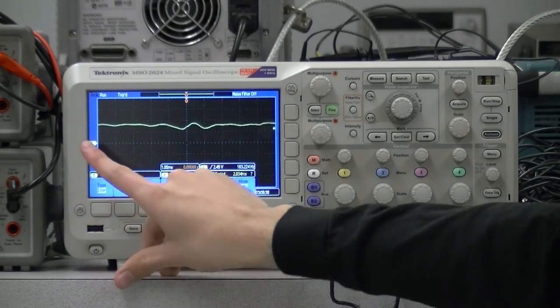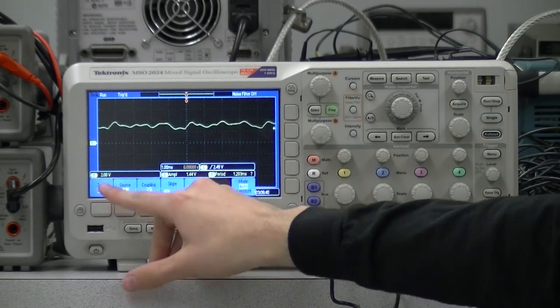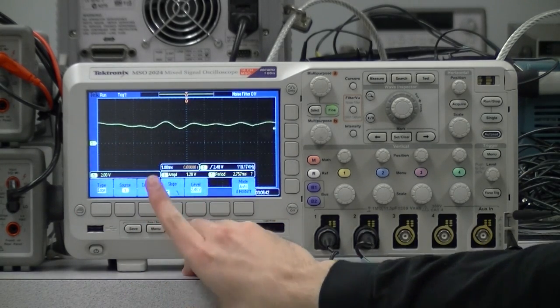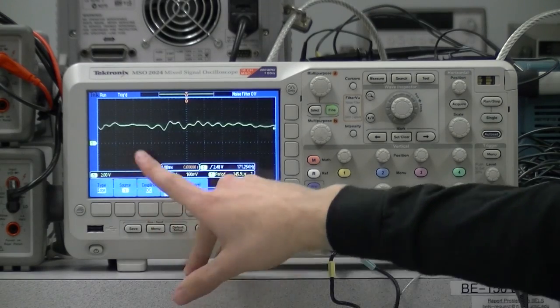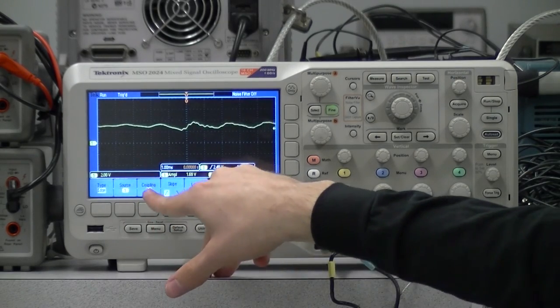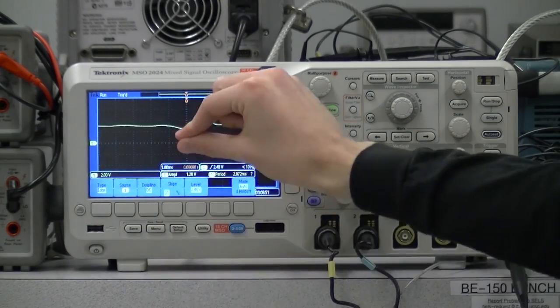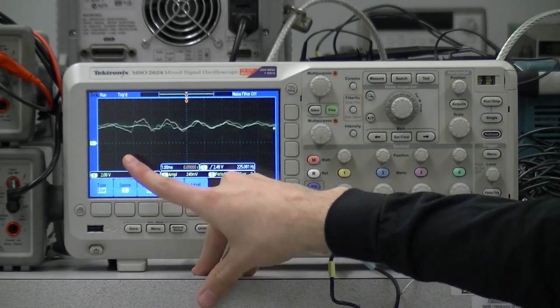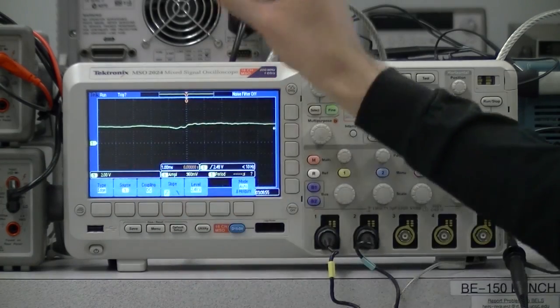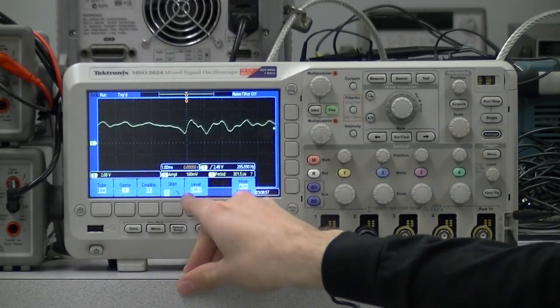It is triggering off channel one, and it is DC coupled. Note that this coupling is actually separate from the one for the channel display itself. We can see here that the slope is rising edge, going from a low voltage to a high voltage, rather than a falling edge from high to low, and that it is at 2.48 volts.